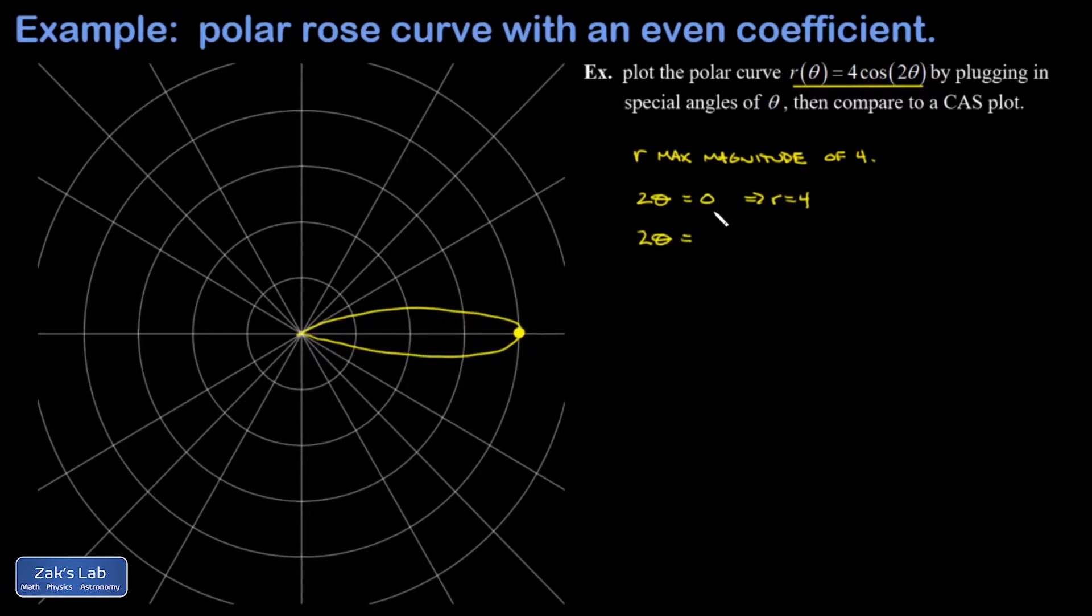I want to go to the next time I get a maximum magnitude for r. That's when 2θ is equal to π. The cosine of 2θ is going to be equal to -1, so I get r = -4.